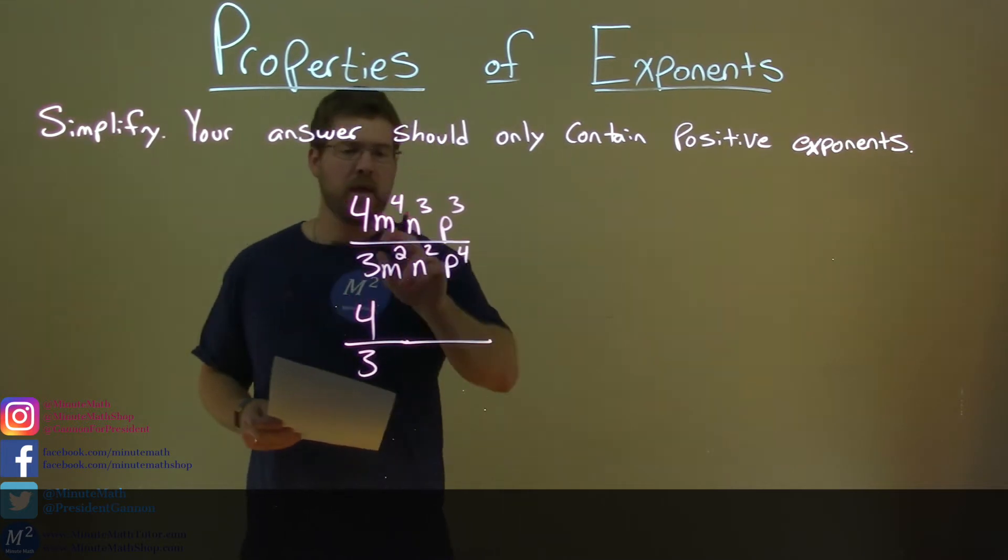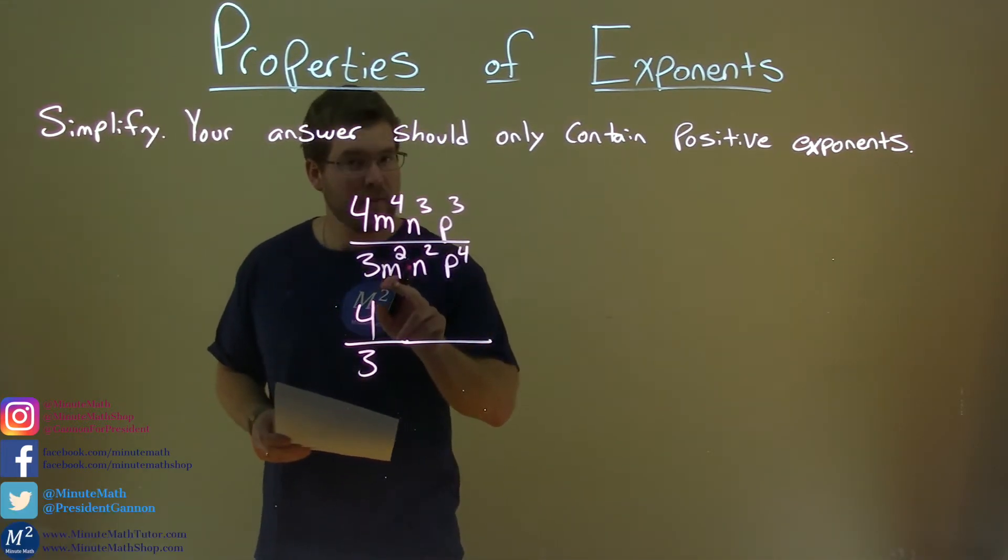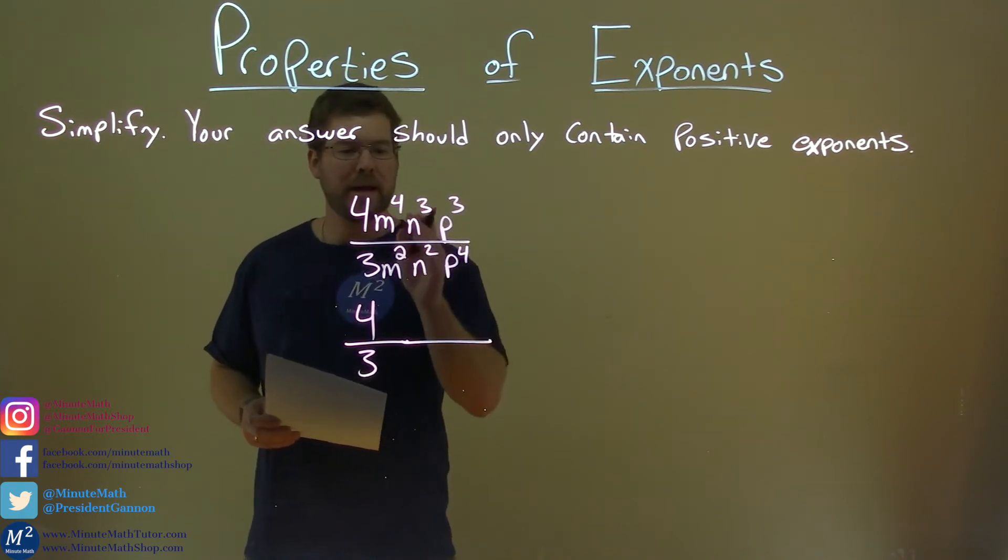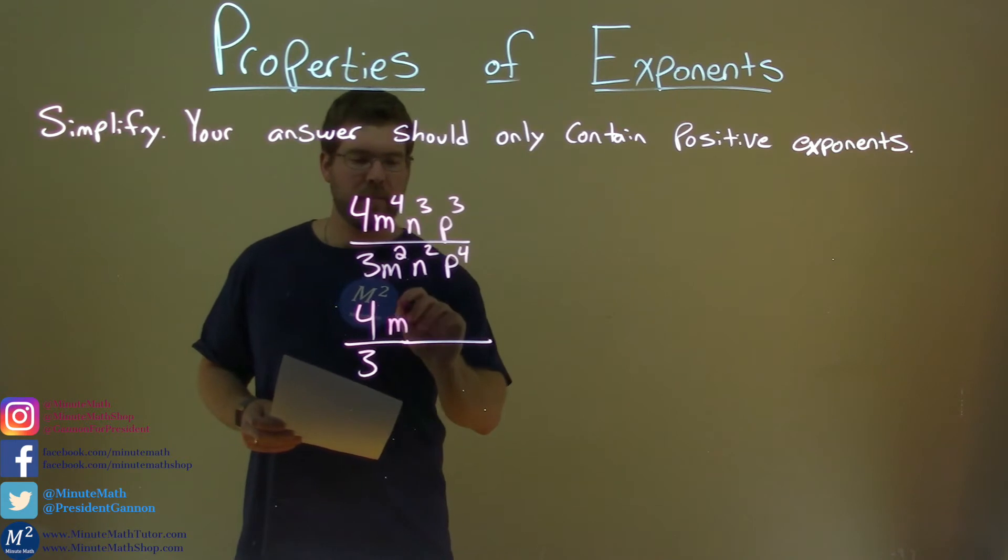Moving along, m to the 4th, remember combined like terms, divided by m squared. Subtract the exponents, 4 minus 2 is a positive 2, keeps it in the numerator, m squared there.